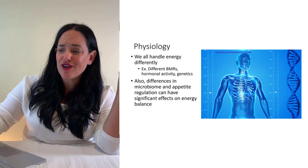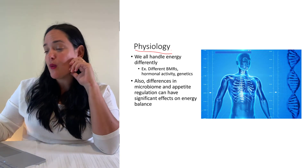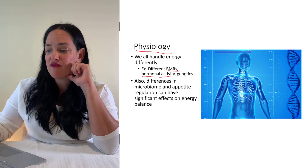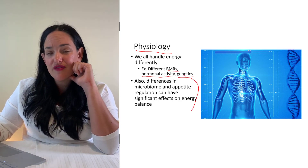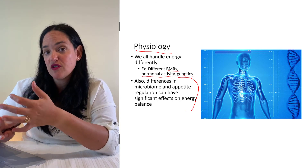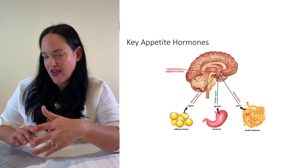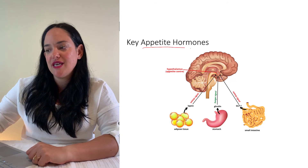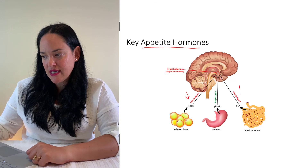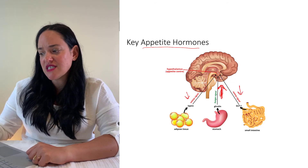Our physiology — the makeup and functioning of our bodies — affects energy balance too. We have different basal metabolic rates, different hormonal activity, different genetics, and all of these differences affect our appetite and physical activity patterns. Key appetite hormones also play an important role: some decrease appetite and some increase it. Leptin, secreted by fat cells when they get larger, is a stop signal on the hypothalamus.